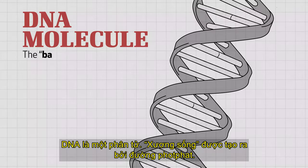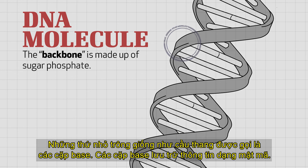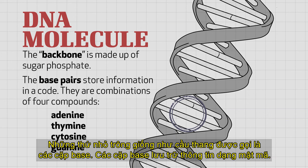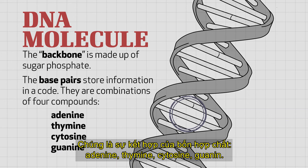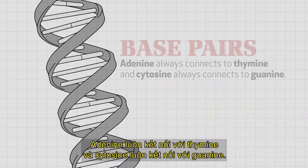DNA is a molecule, and the backbone of the molecule is made of a sugar phosphate. The little things that look like stairs are called base pairs. The base pairs store information in a coded language. They are combinations of four compounds: adenine, thymine, cytosine, and guanine. Adenine always connects to thymine, and cytosine always connects to guanine.